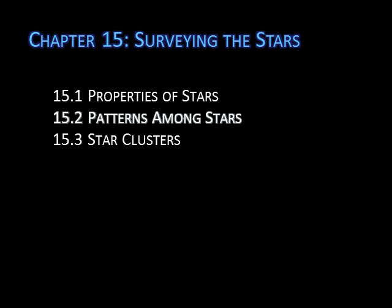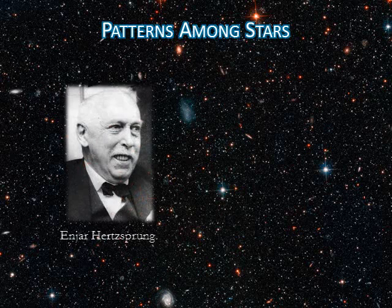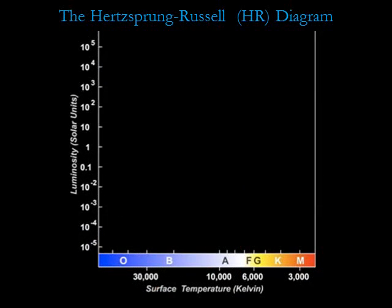In this lecture, we'll learn what a Hertzsprung-Russell diagram is, how we categorize stars, and why the properties of some stars vary with time. In the early 1900s, a Danish astronomer named Hertzsprung and an American astronomer named Russell independently decided to make graphs of stellar properties. These graphs revealed previously unsuspected patterns among the properties of stars and ultimately unlocked the secrets of stellar life cycles. What Hertzsprung and Russell plotted was stellar luminosity versus spectral type. We call these plots Hertzsprung-Russell diagrams or HR diagrams.